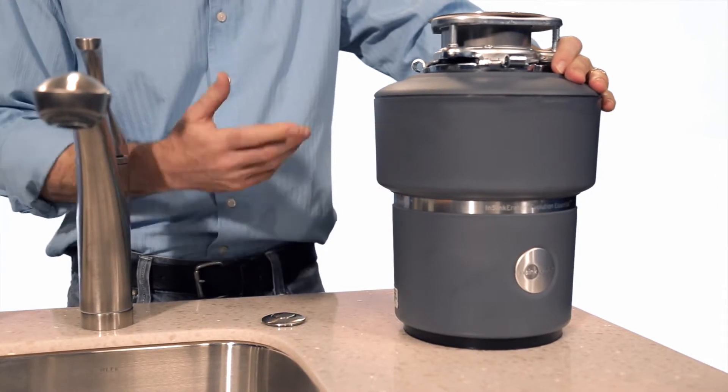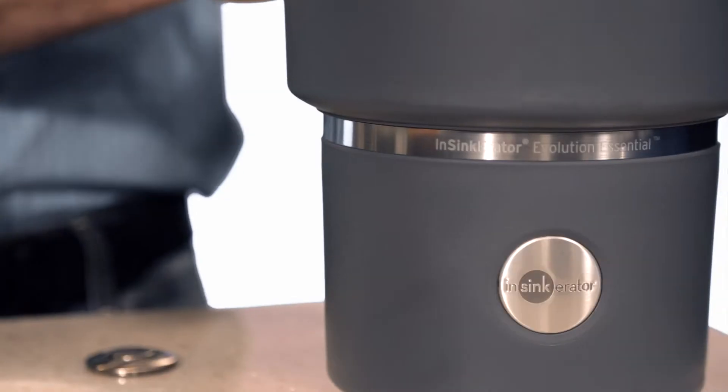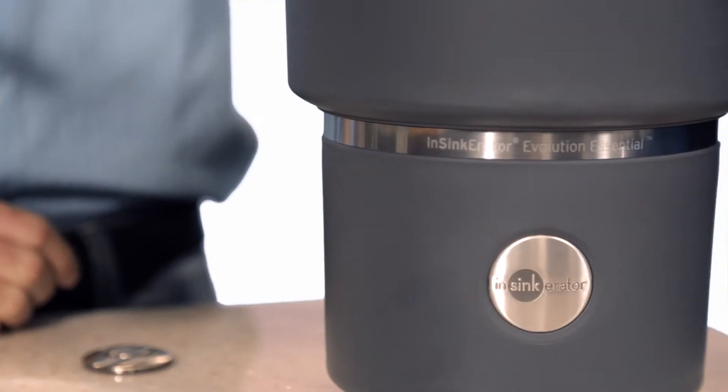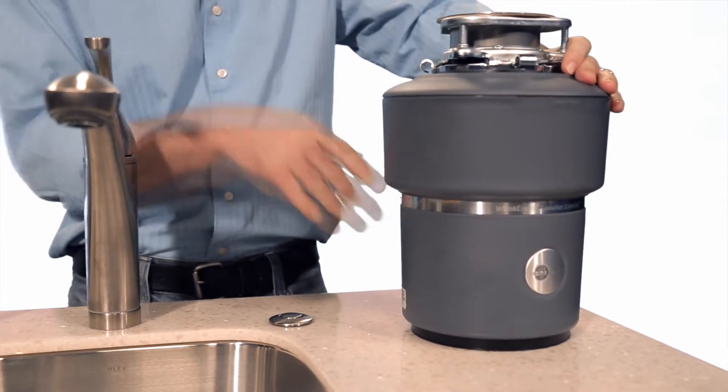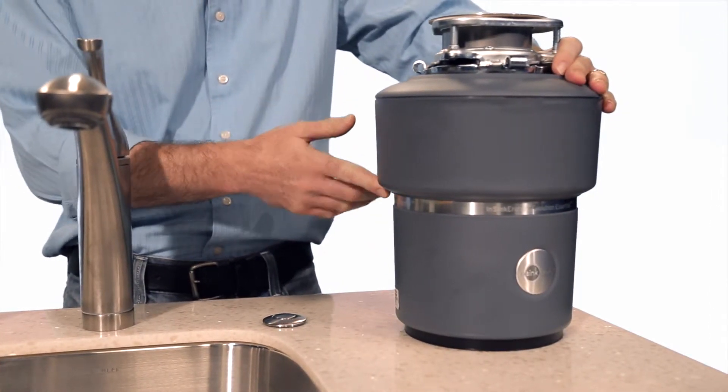With Essential, you'll have a cleaner kitchen, no mess, no smells. That's because Essential has an efficient two-stage grind system and a powerful three-quarter horsepower motor to handle most food scraps that you can throw into it.